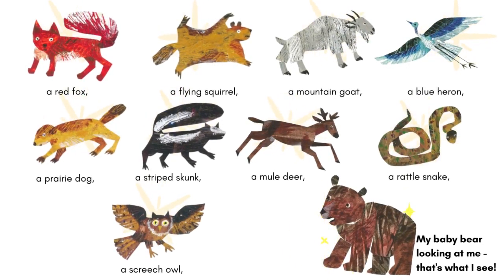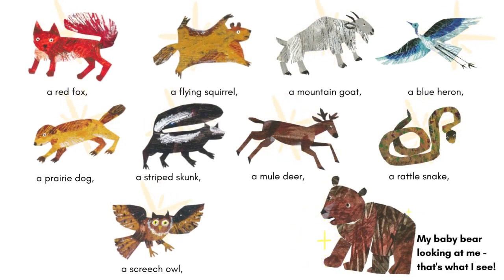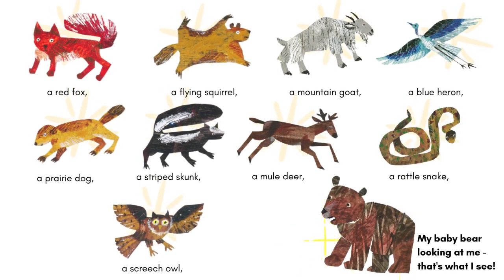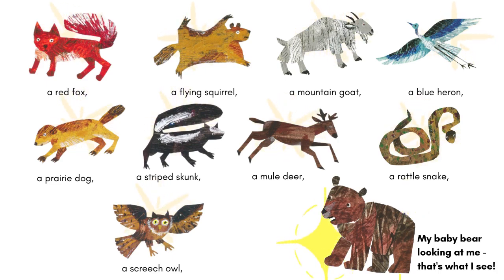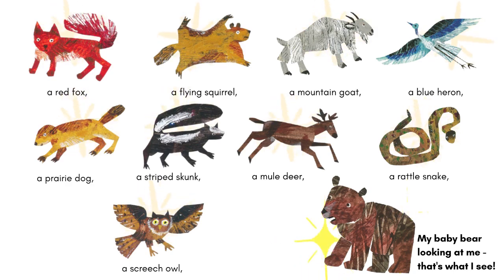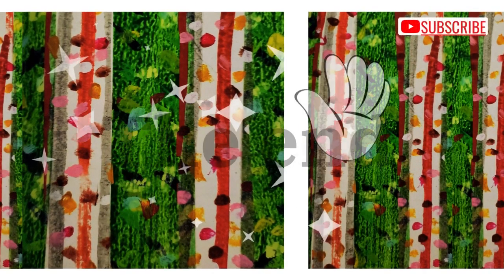a mountain goat, a blue heron, a prairie dog, a striped skunk, a mule deer, a rattlesnake, a screech owl, and my baby bear looking at me. That's what I see! The end.